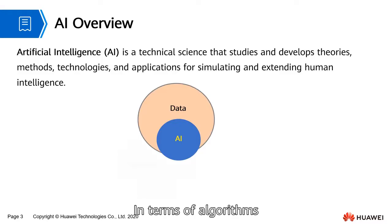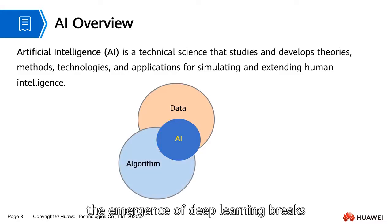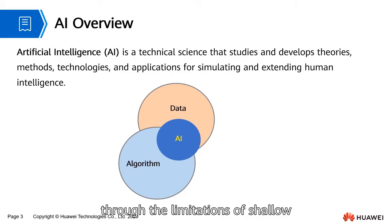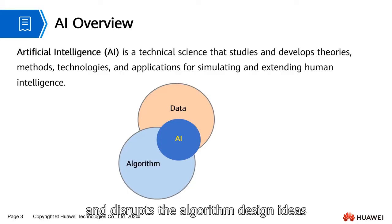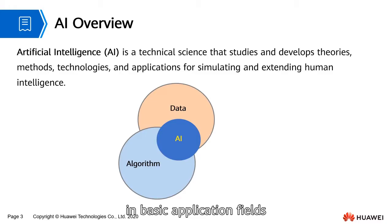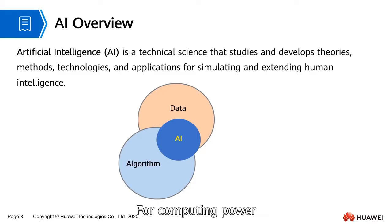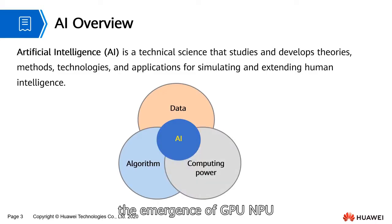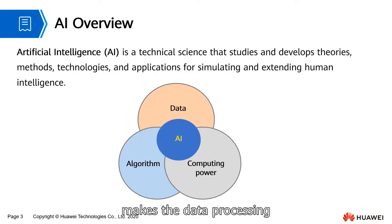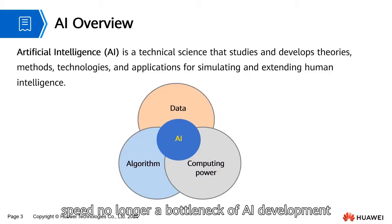In terms of algorithms, the emergence of deep learning breaks through the limitations of shallow learning algorithms used in the past and disrupts the algorithm design ideas in basic application fields such as voice recognition, semantic understanding, and computer vision. For computing power, the emergence of GPU, NPU, and FPGA dedicated chips makes the data processing speed no longer a bottleneck of AI development.